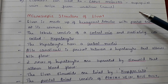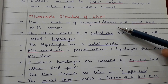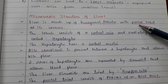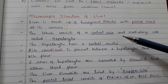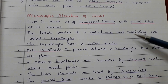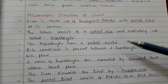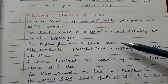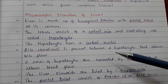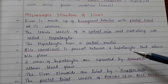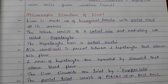Microscopic structure of the liver: the liver is made up of hexagonal lobules with a portal triad at its corners. Each lobule consists of a central vein and radiating cells called hepatocytes, which have a central nucleus. Bile canaliculi are present between two hepatocytes and allow bile flow.